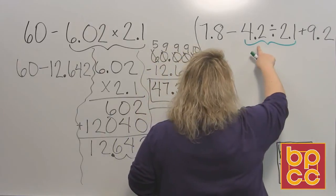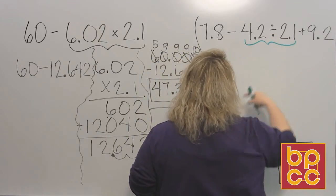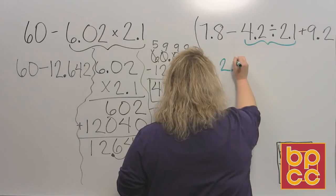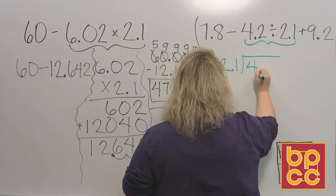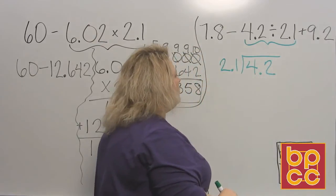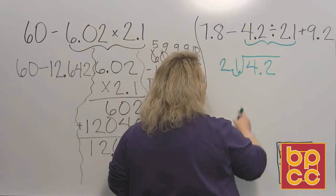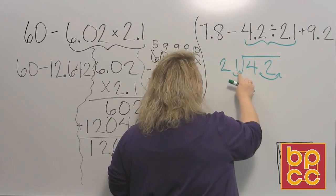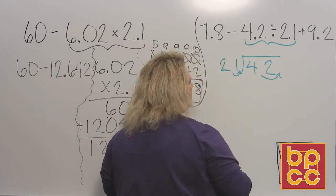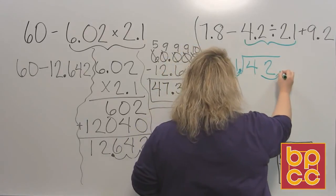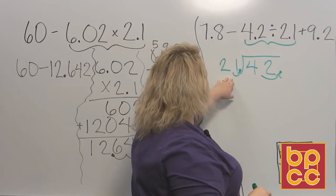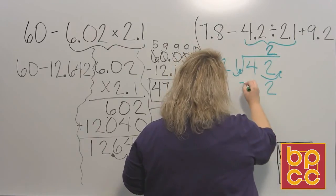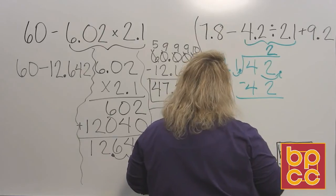This problem says 4.2, 4 and 2 tenths, divided by 2.1, 2 and 1 tenths. So remember, when you're doing division, you have to have a whole number on the outside. So if I do 2 and 1 tenths, and I want to divide that into 4 and 2 tenths, remember what you have to do to get the decimal out of there? You move it one space to the right, and if you move it one space on the outside, you move it one space on the inside. Okay? So now I'm going to divide 21 into 42. That's what I'm fixing to do now. So my decimal moved to the end of this number, and it moved to the end of that number. So now I say, how many times is 21 divided into 42? Well, it goes in there twice. So that comes out even. So 2 is my answer for that area.